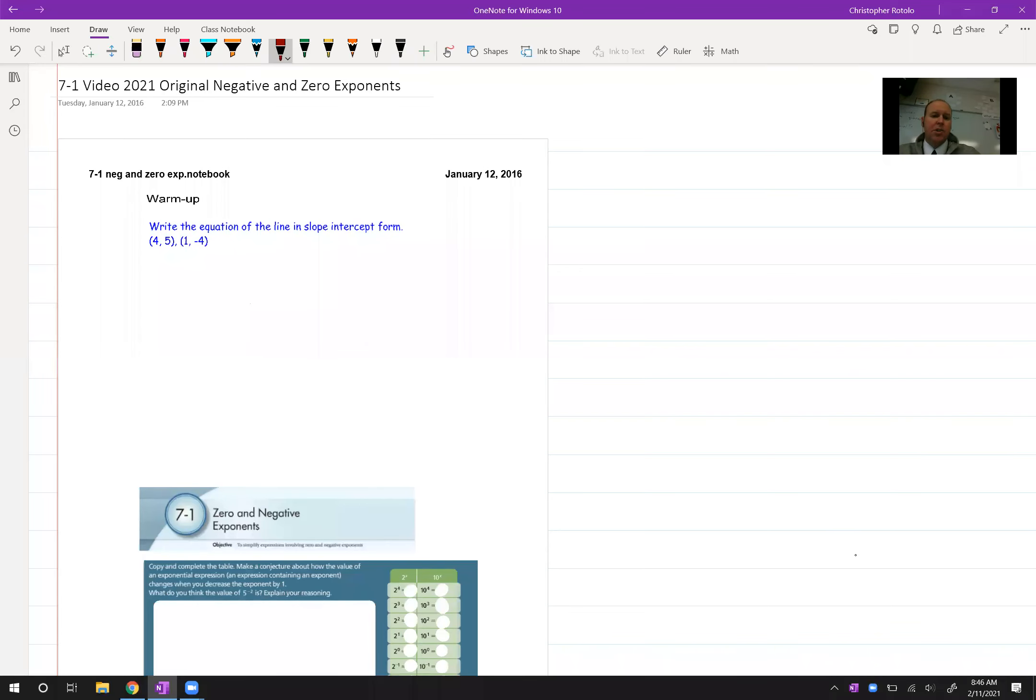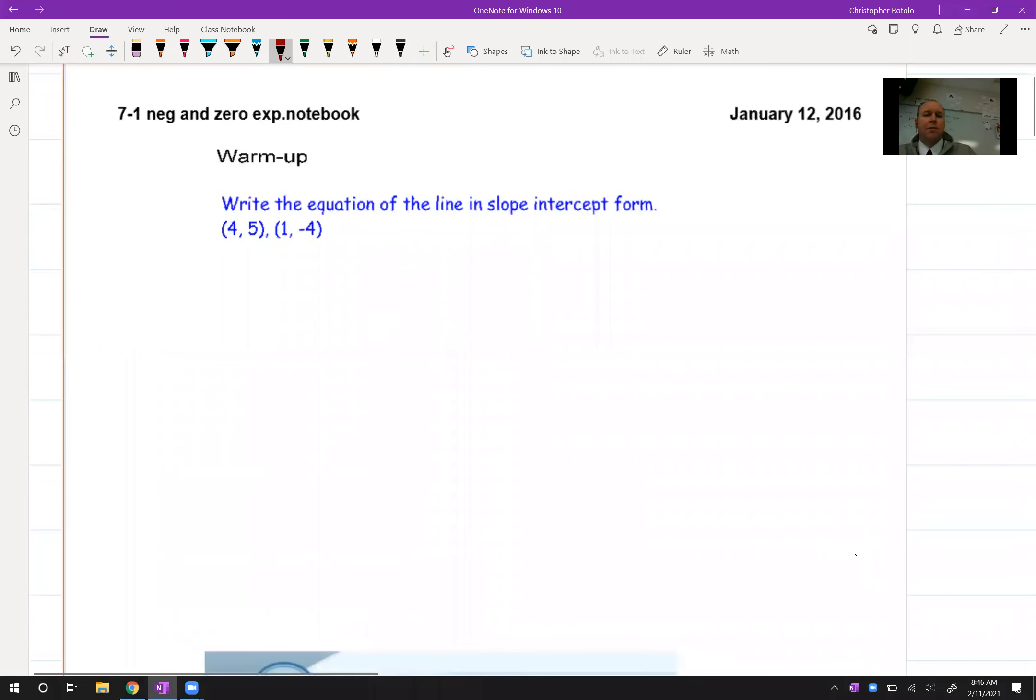Alright, Algebra 1, we're going to start Chapter 7, but I do want to take a minute and just review some linear things because we're going to get away from them. So you want to make sure that you remember how to do something like this. Slope intercept form, I get these two points, so we're going to find out what the slope is, that's for sure.